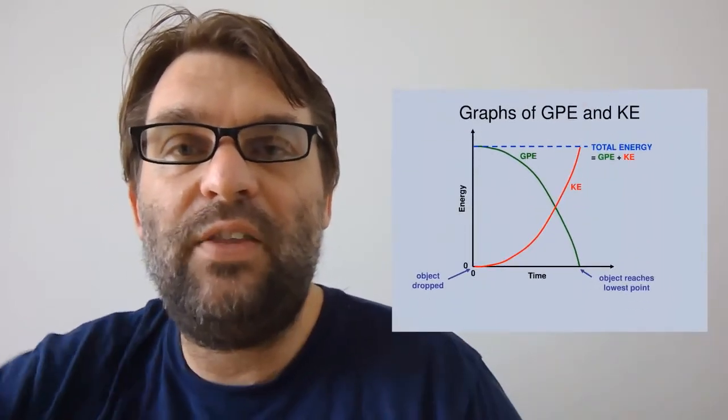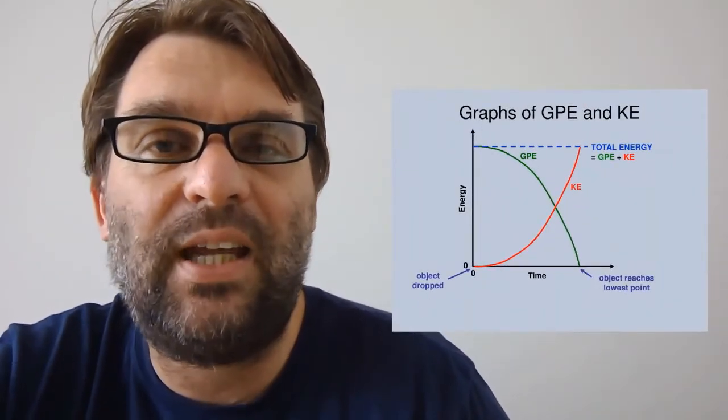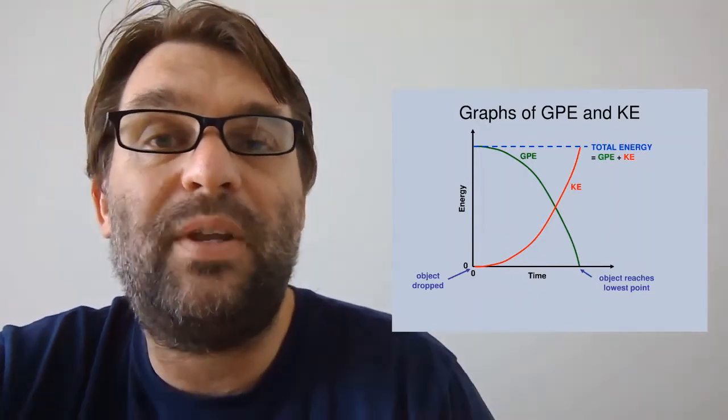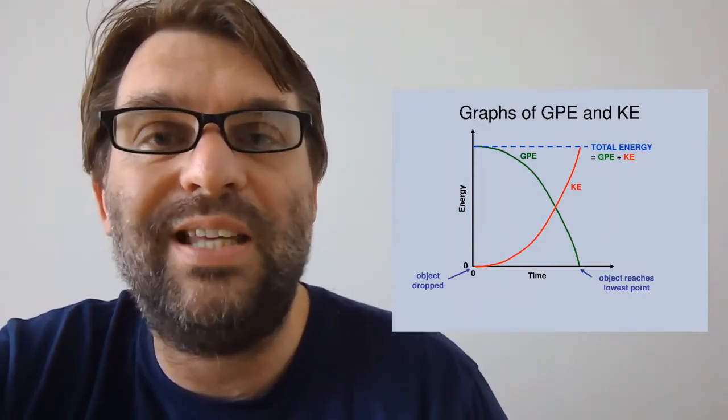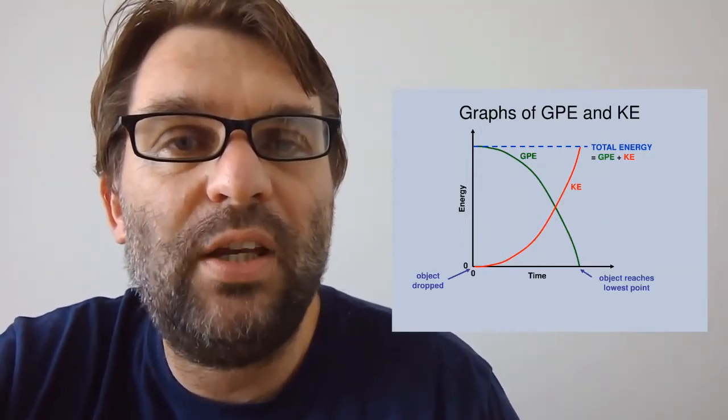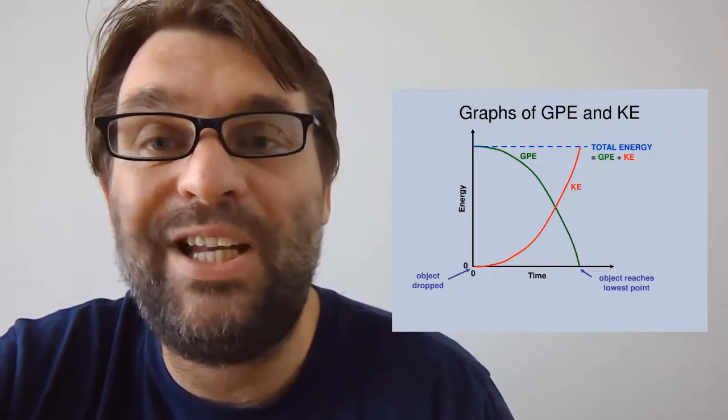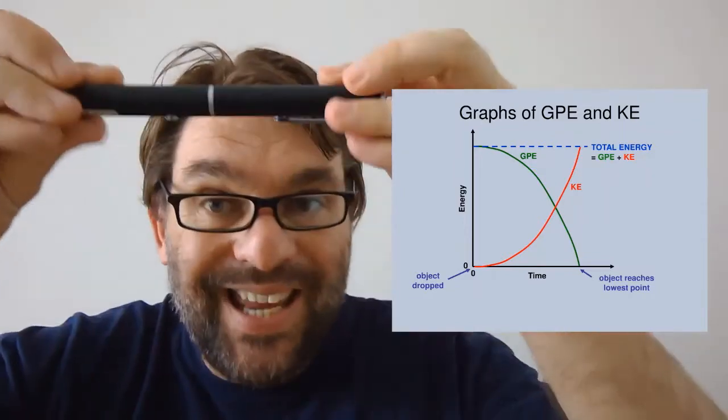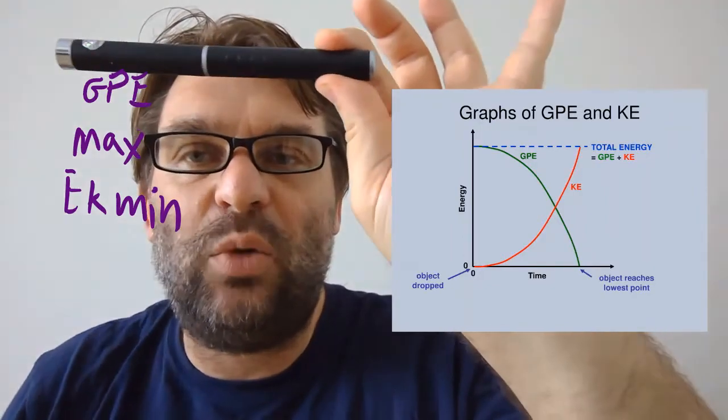So finally, these are the graphs of gravitational potential energy and kinetic energy. You can see at the start, before the object was dropped, the gravitational potential energy is a maximum, and the total energy will be equal to the gravitational potential energy plus the kinetic energy. So at the top, where it's here, gravitational potential energy will be at a maximum.